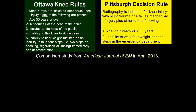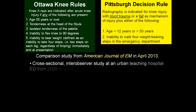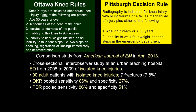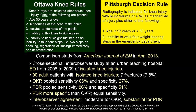A second study from April 2013 in the American Journal of Emergency Medicine examined isolated knee injuries at an urban teaching hospital from 2008 to 2009. In 90 adult patients with isolated knee injury and 7 fractures, the Ottawa knee rule was 86% sensitive and 27% specific; Pittsburgh was similarly 86% sensitive but 51% specific. The Pittsburgh Decision Rule is more specific with equal sensitivity. Furthermore, people are much better at applying the Pittsburgh rule — it's very simple: how old are you, and can you walk? Compared to the five-step Ottawa knee rule.